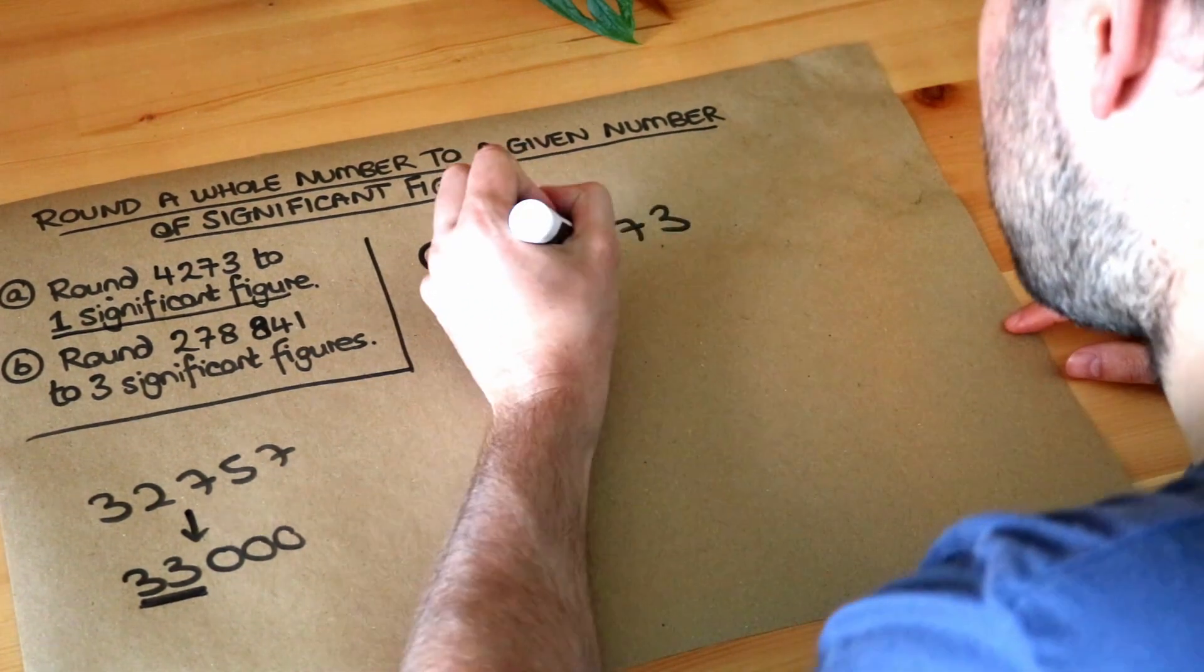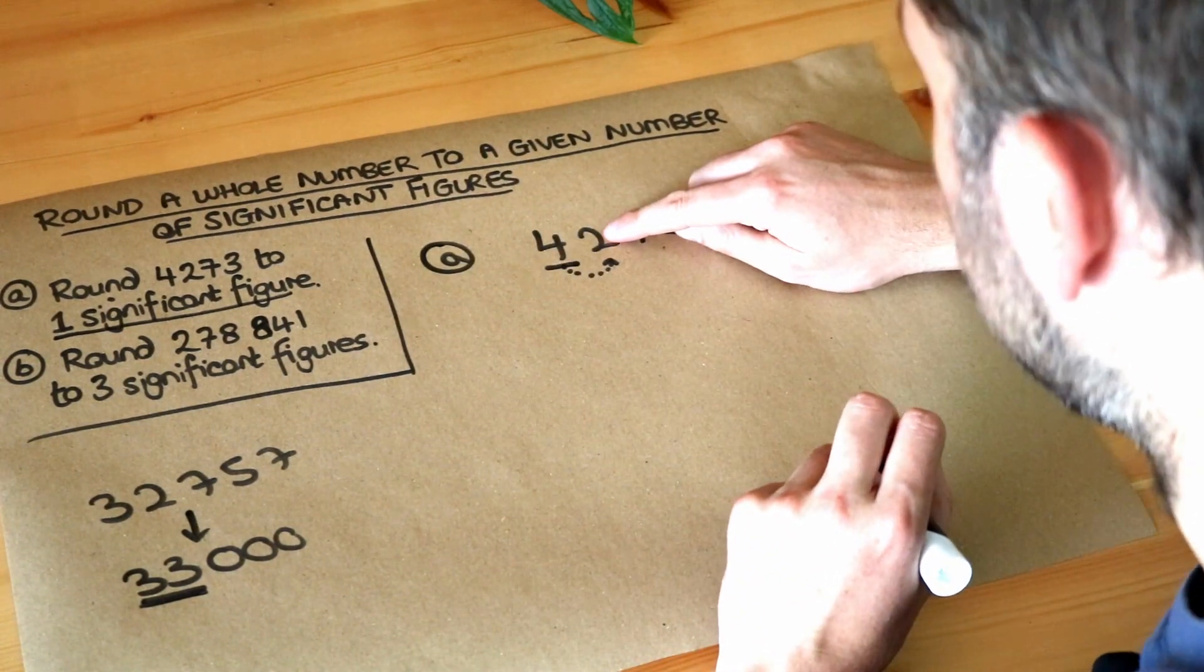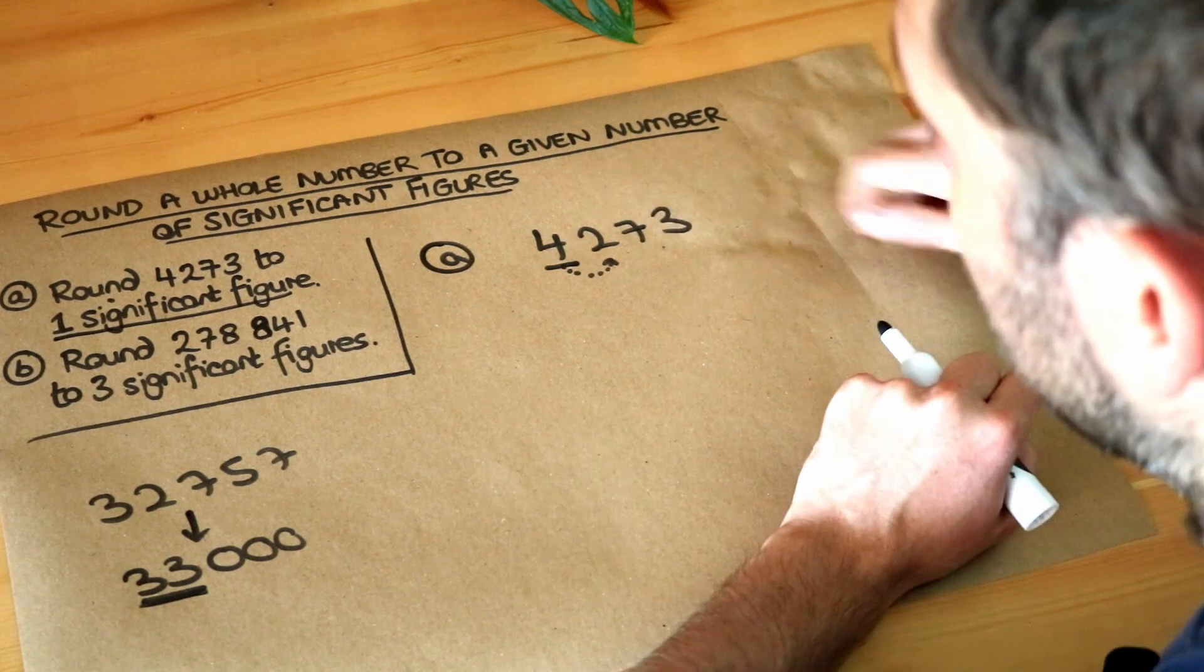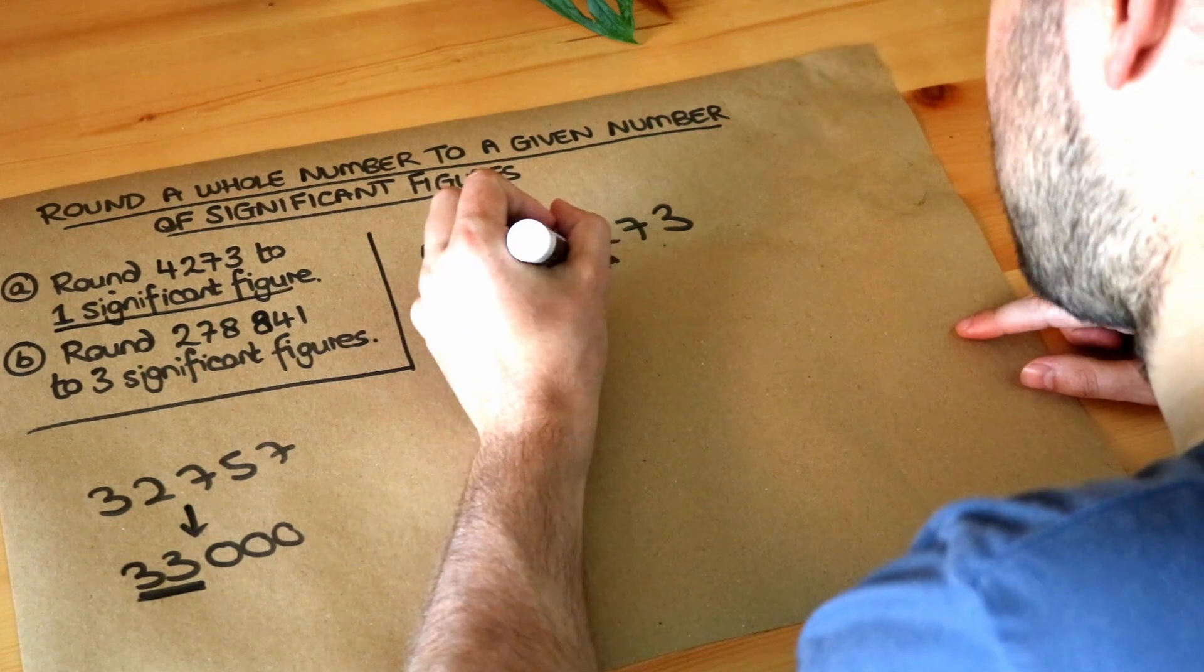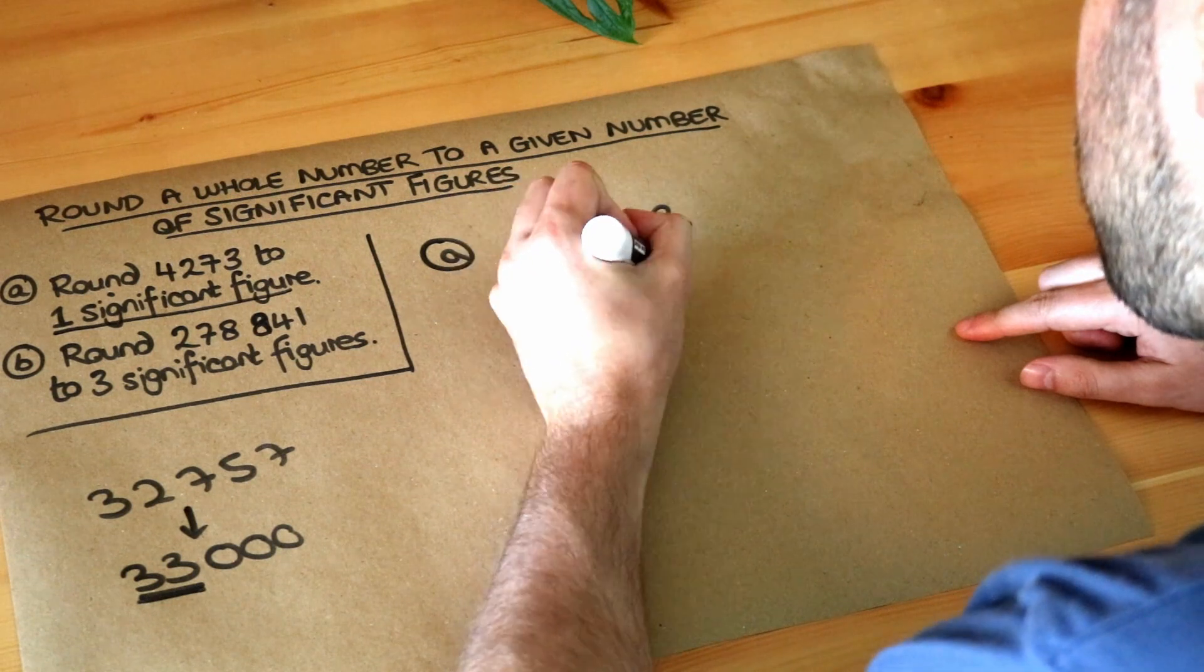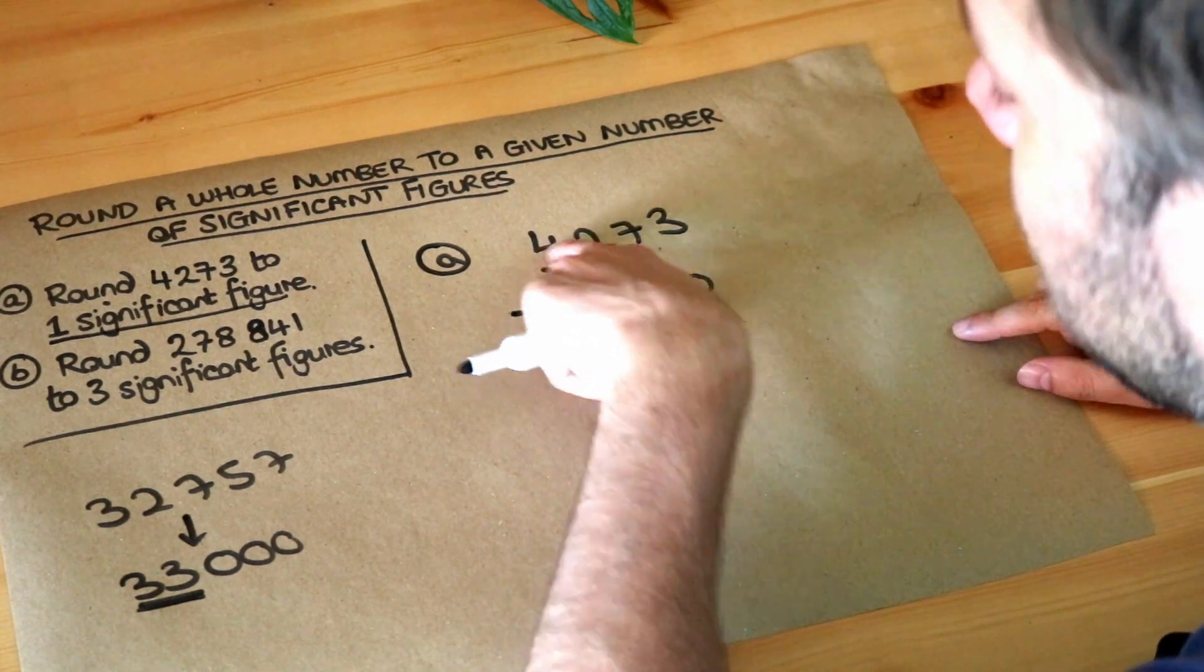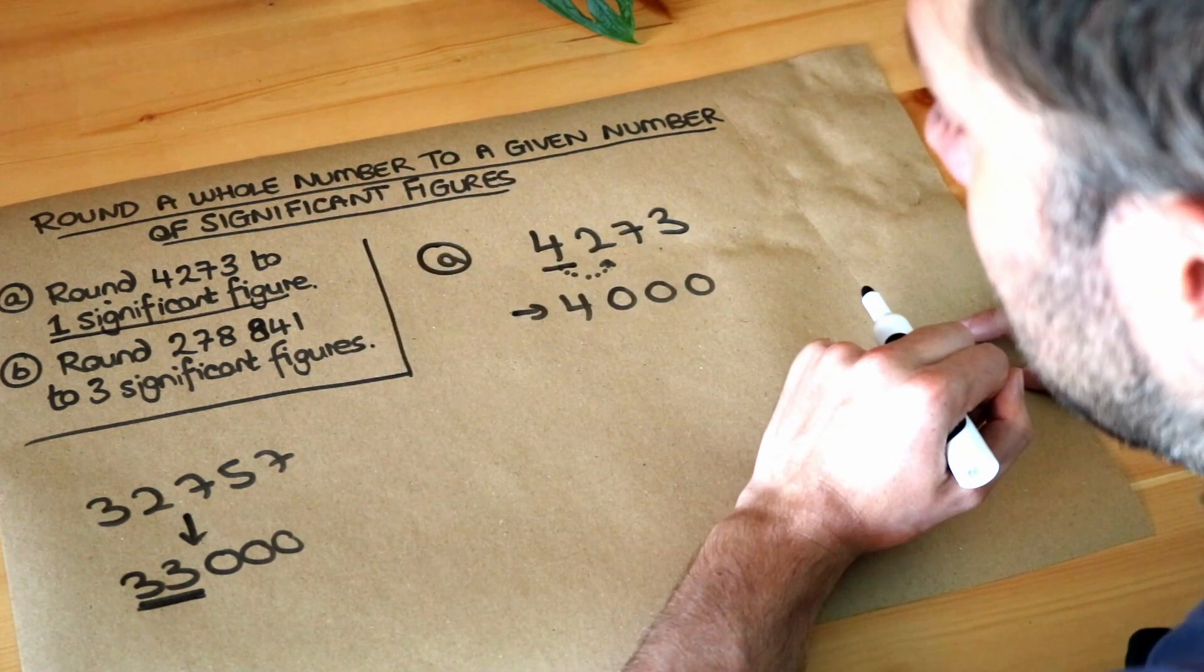Now just like when we're rounding we do need to check the next digit. So is the next digit five or above? If yes this number would go up by one. If no the four stays as it is. So this clearly isn't five or above so the four is going to stay as it is but the rest of the digits get wiped out and we replace them with zero. As I said before we need the zeros because otherwise that four digit wouldn't be the thousandth digit anymore. So what we've actually done here is we've rounded it to the nearest thousand.